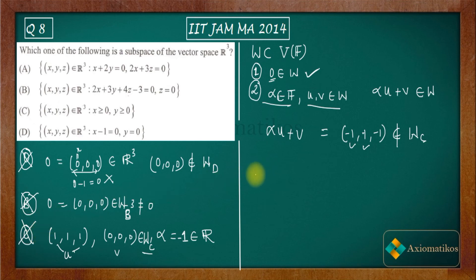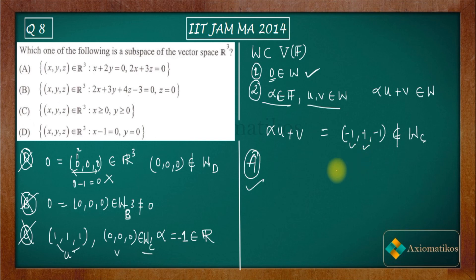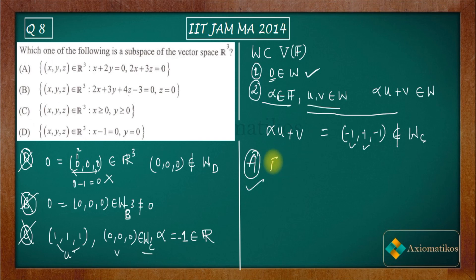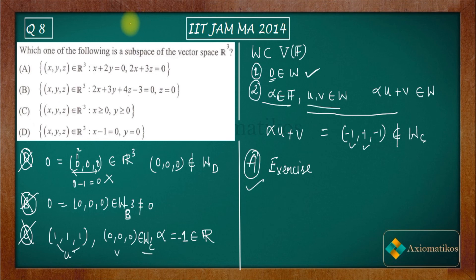That means option A is correct. As an exercise for you, you have to show these two conditions: that the zero element belongs to WA, and that the closure condition holds. These are the two conditions you have to show — it is very easy. So it is your exercise to show that the subset in option A is a subspace. That means A is the correct option, and this is how we can solve this question.